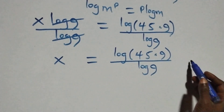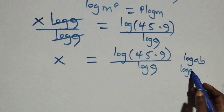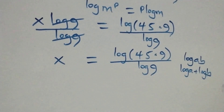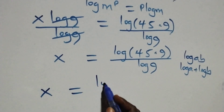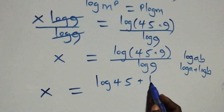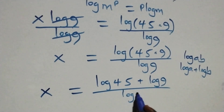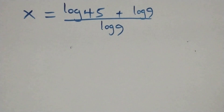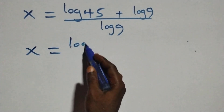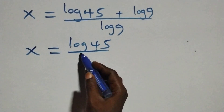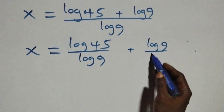This follows the law of logarithms: log(a × b) is the same thing as log a plus log b. So here we have x equals log 45 times 9 over log 9, and we separate this into two fractions: x equals log 45 times 9 over log 9 plus log 9 over log 9.